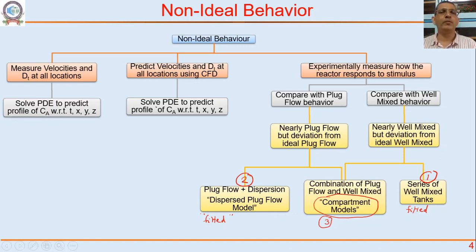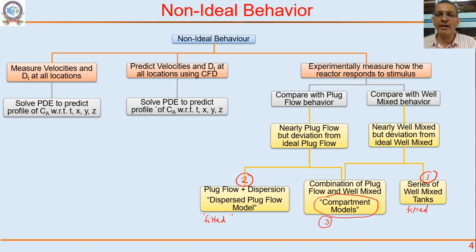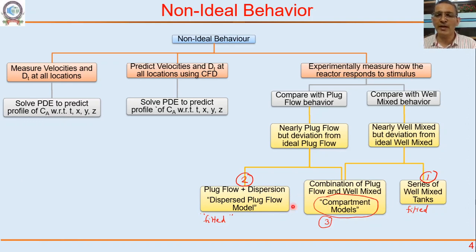The point I am trying to make is that for a given reactor or equipment, we can do an experiment, measure the residence time distribution — the E-curve — and then try to comprehend that behavior by fitting either a tanks-in-series model, a plug-flow-with-dispersion model, or a combination of compartments. Once we understand how a real reactor behaves, we can take steps to improve it or predict what the conversion will be.